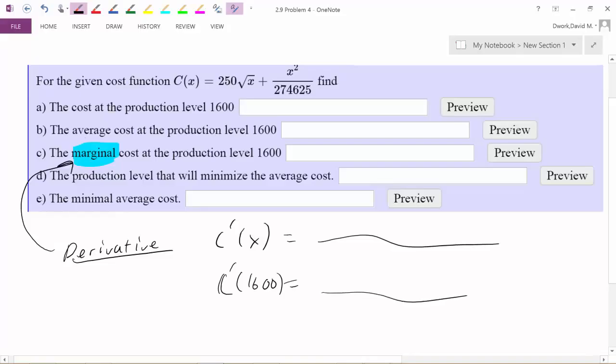Now, the next ones are even more fun. And they try and kind of trick you a little bit here. The production level that will minimize average cost. So watch out, we've got two things being mixed in there. First thing, minimization.